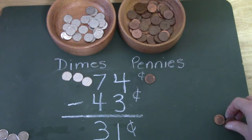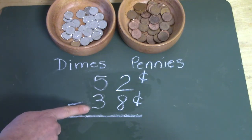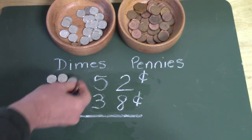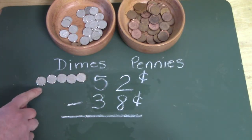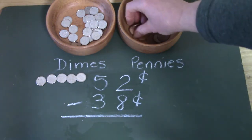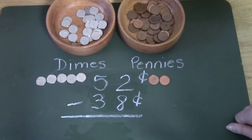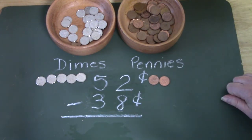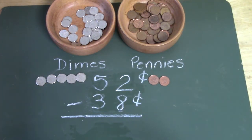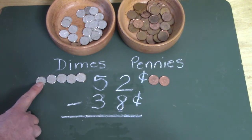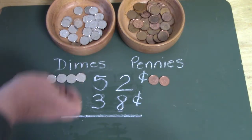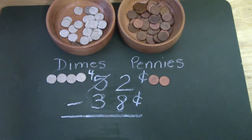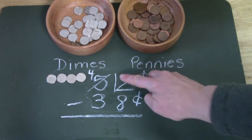Let's see if we can try this one more time. We have 52 cents and we're going to subtract 38 cents. I'm going to start off by getting out five dimes to demonstrate 50: 10, 20, 30, 40, 50. And I need two pennies to show the two cents in 52. Let's start by subtracting our ones place. We need to subtract eight pennies from our two pennies — that's going to be pretty hard, isn't it? We don't have enough. We need to trade in one of our dimes for 10 pennies. So we're going to trade in one dime. I'm going to cross off my five because I only have four left. And I get to add 10 pennies to this side, so instead of two, I need 12.